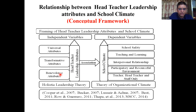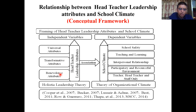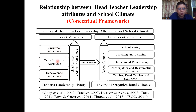And in the case of benevolence attributes, there were variables like loyalty, selflessness, integrity, and honesty. All together, there were 14 different variables under these three specific attributes: universal, transformative, and benevolence.